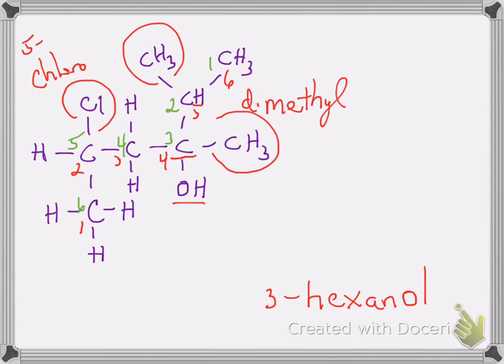The chloro is going to fall on the fifth carbon, and the methyls—there's two of them—so it's going to be a dimethyl. They fall on the two and three carbons. Now I just need to put them together in alphabetical order. The di doesn't count in alphabetical organization of the prefix, so I'll be using the C in chloro and the M in methyl. Chloro comes before methyl, so therefore the name of this molecule is going to be 5-chloro-2,3-dimethyl-3-hexanol.